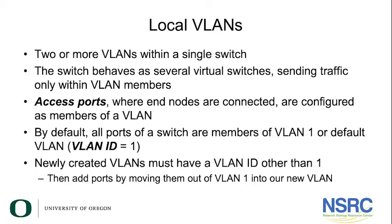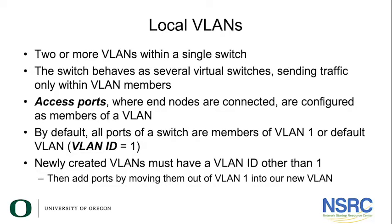Local VLANs: this is where we have two or more VLANs on a single switch. The switch behaves as if it's several separate virtual switches, sending traffic only within VLAN members. Access ports are where end nodes are connected and are configured as members of a VLAN. By default, all ports of a switch are members of VLAN 1. Newly created VLANs must have an ID other than 1, and then you add ports by moving them out of VLAN 1 into this newly created VLAN.